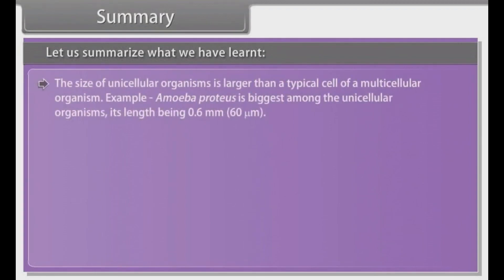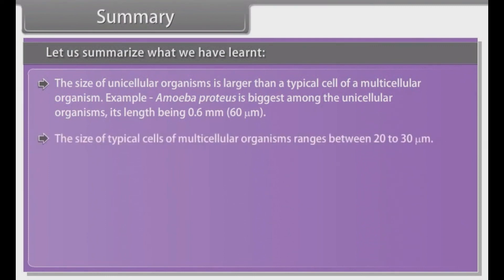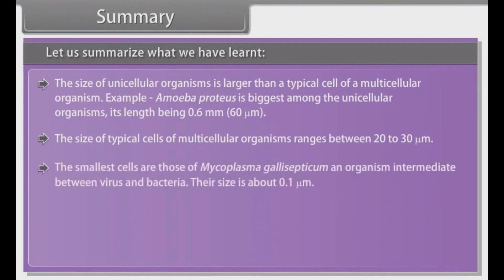The size of unicellular organisms is larger than a typical cell of a multicellular organism — for example, Amoeba proteus is the biggest among unicellular organisms, its length being 0.6 millimeter (60 micrometers). The size of typical cells of multicellular organisms ranges between 20 to 30 micrometers. The smallest cells are those of Mycoplasma gallisepticum, an organism intermediate between virus and bacteria; their size is about 0.1 micrometer.